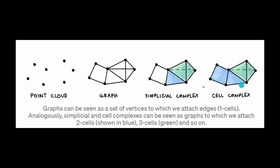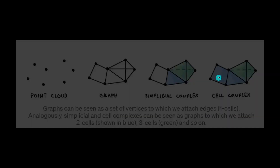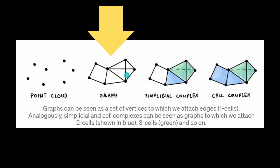Now let's be specific. If you increase the topological complexity, at first you have just a point cloud — a very simple set of points. Then you connect it and build a graph. As I showed in one of my last videos, we can go to simplicial complexes, or if you go even more general, we go to cell complexes. But just to make sure, the next two videos will focus on graph neural networks, so we will stick here on this simple case.